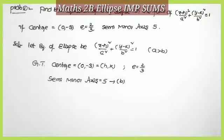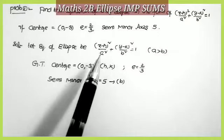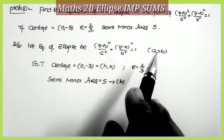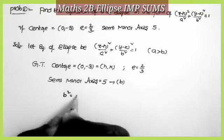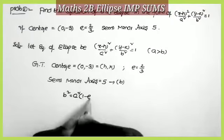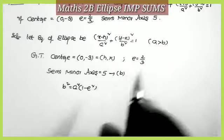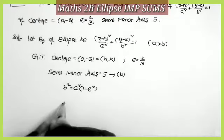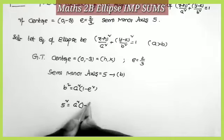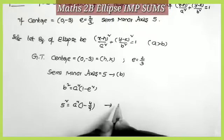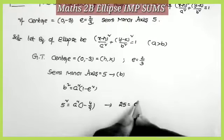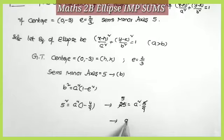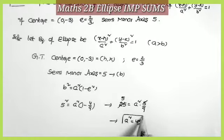Since center and b are given, it is enough to find a and get the equation. In the case a > b, the formula is b² = a²(1 − e²). Substituting: 5² = a²(1 − (2/3)²) = a²(1 − 4/9) = a²(5/9). So 25 = a²(5/9), which gives a² = 25 × 9/5 = 45.